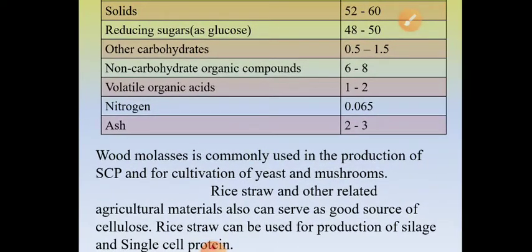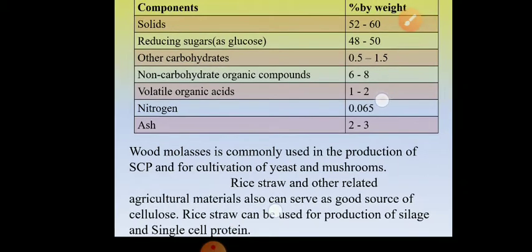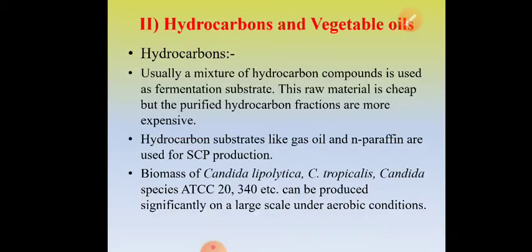Wood molasses is commonly used in the production of single cell protein as well as for cultivation of yeast and mushrooms. Additionally, rice straw — the waste of rice plants — and other related agricultural materials can also serve as a good source of cellulose, used for the production of silage for animals as well as for single cell protein.